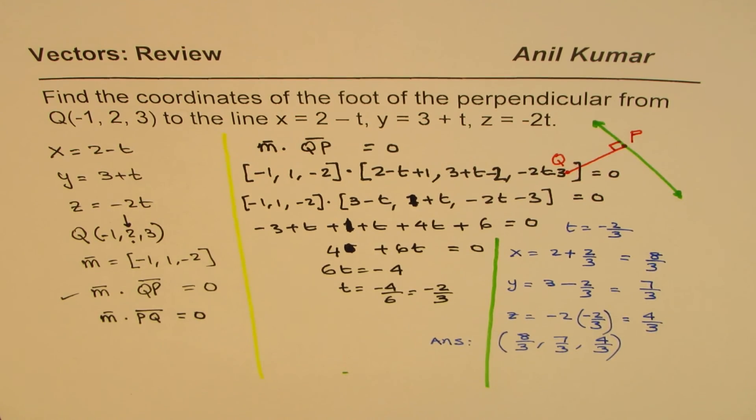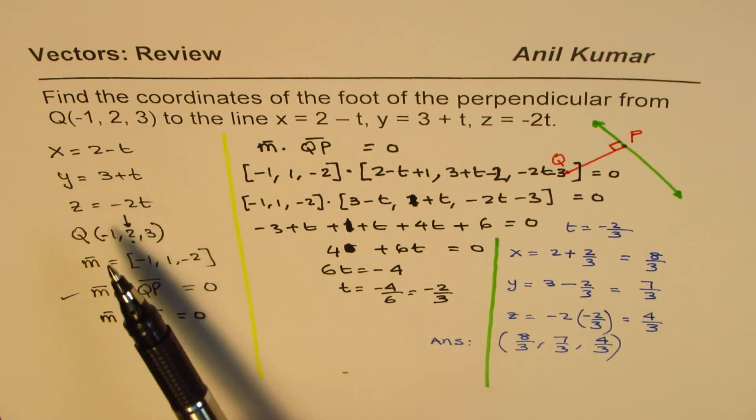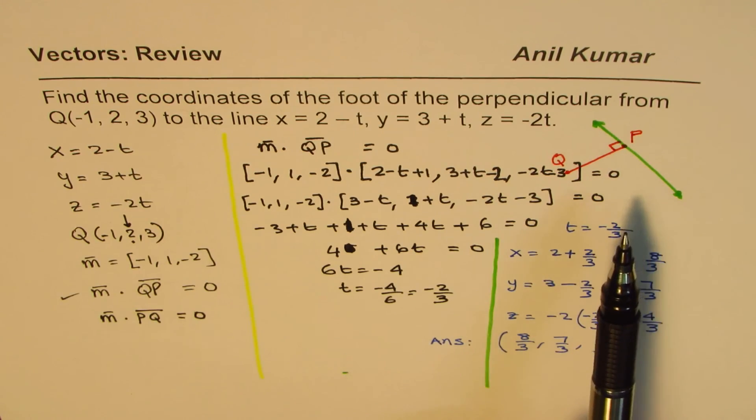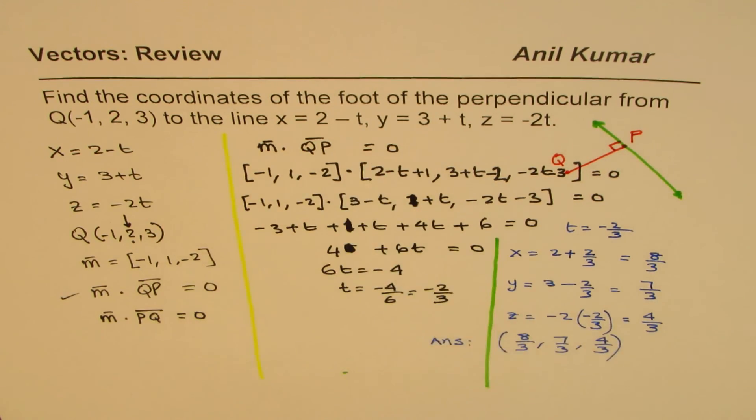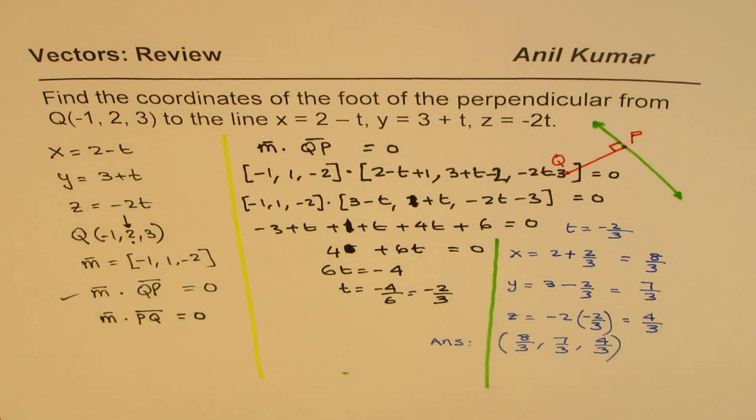So the idea is to write down the general point on this line and then find QP. Dot product should be 0 with the direction of the line. So that gives us the value of the parameter t. Once we know that, we know exactly which point we are talking about. I'm Anil Kumar, and I hope that helps. Thank you, and all the best.